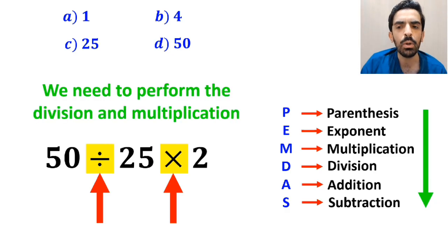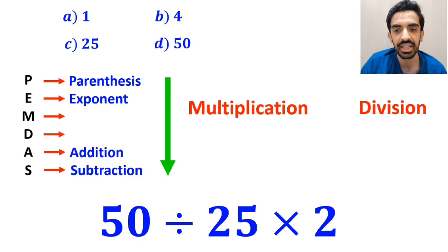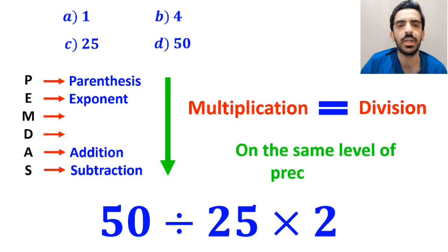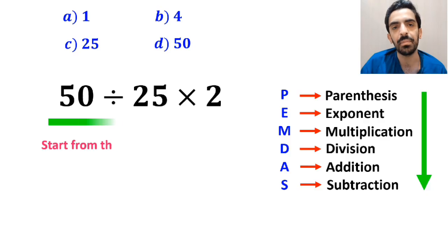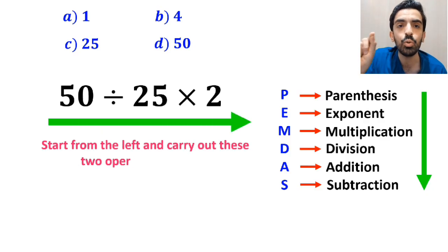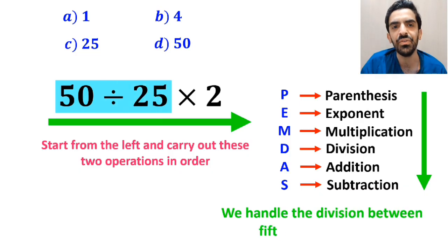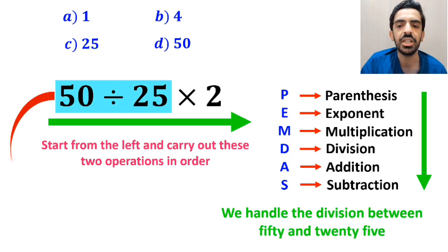However, it's very important to keep in mind that multiplication and division are on the same level of precedence. In this case, the best approach is to start from the left and carry out these two operations in order. So, first we handle the division between 50 and 25, which simplifies this expression to 2 times 2.